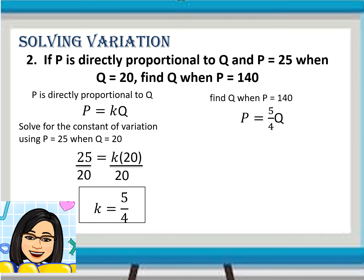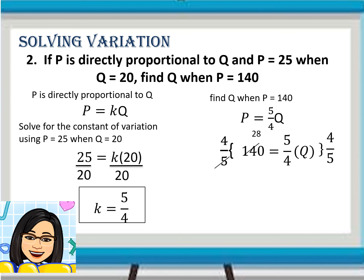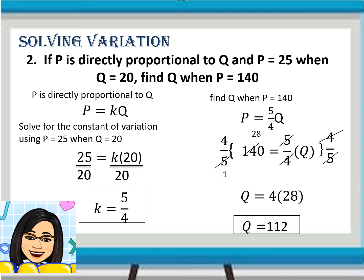Now let us find Q when P is equal to 140. Using the variation equation P is equal to 5/4 times Q, substitute P which is 140. To isolate Q, multiply both sides by 4/5. We can simplify: 140 divided by 5 gives us 28, and the 5's and 4's cancel on the right side. So, Q is equal to 4 times 28, which simplifies to 112.